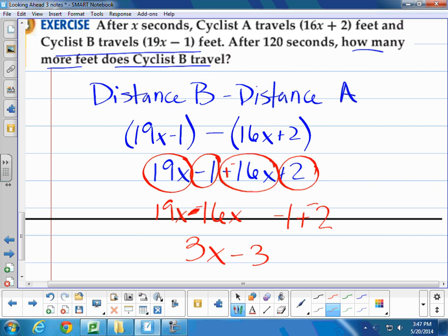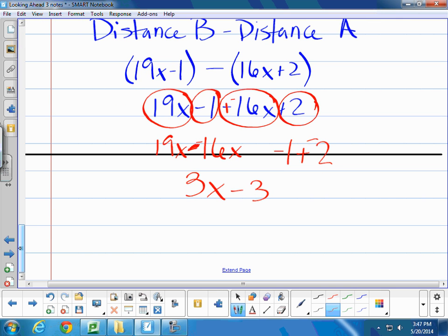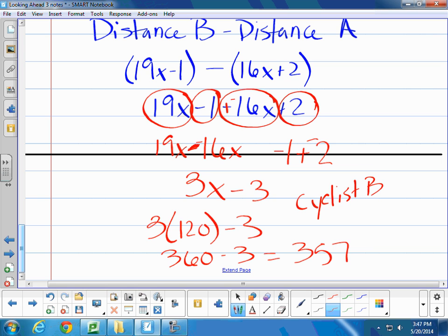With that, I can evaluate this expression for 120 minutes. It says after 120 seconds. And they said x represent our seconds. So to finish solving this, I would just plug in 120 for x and solve for the value. And when I do that, I end up with 360 minus 3, which is 357. So what this means is cyclist B travels 357 feet further in that time.